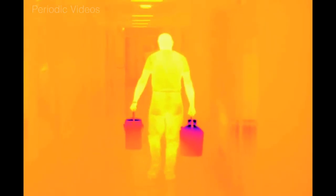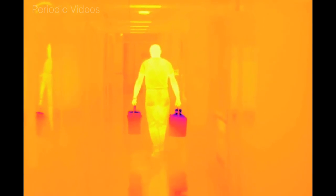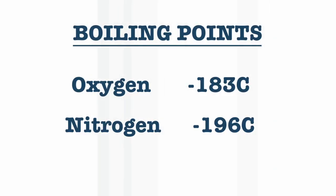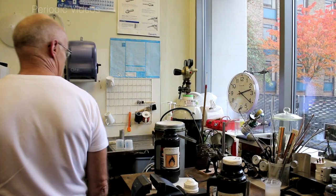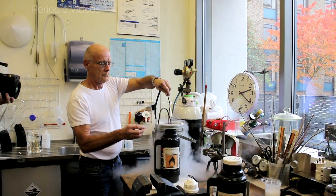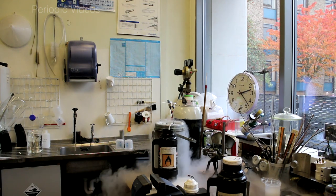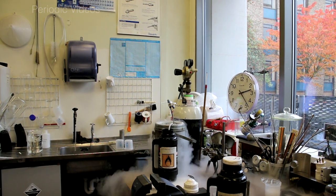Once Neil did that, he had to carry the dewers back to his lab where we're going to make the liquid oxygen. Now, liquid oxygen has a higher boiling point than liquid nitrogen, and so you can condense liquid oxygen using liquid nitrogen because it's colder.